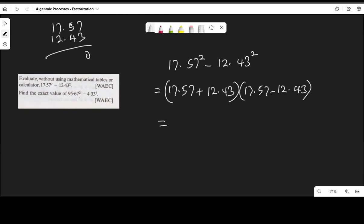Now calculating 17.57 plus 12.43: write 0, carry 1, then 1 plus 6 plus 1 equals 8, continuing the addition we get 30.